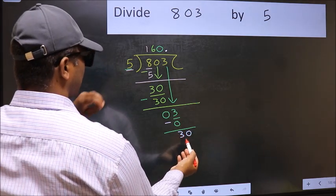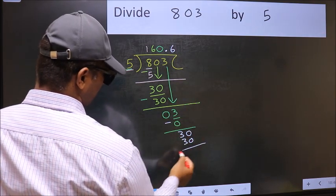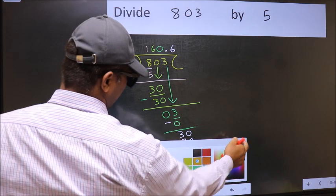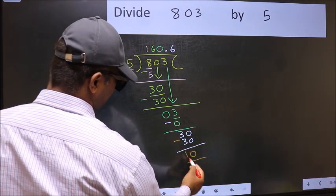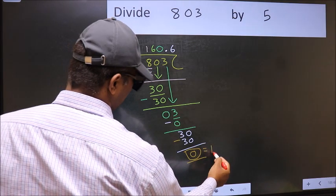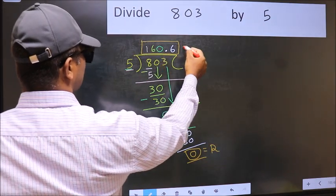When do we get 30 in 5 table? 5, 6, 30. Now you should subtract. 30 minus 30, 0. So, this is our remainder and this is our quotient.